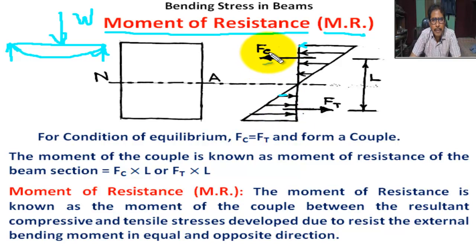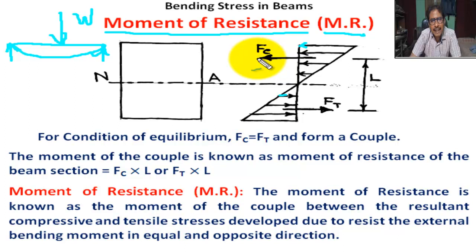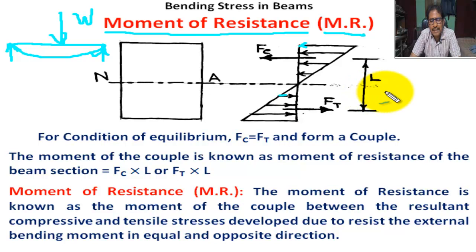If capital Fc is the line of action of the resultant force for compressive stress above the neutral axis, and Ft is the line of action of the resultant force for tensile stress, then Fc acts in one direction and Ft acts in the opposite direction. L is the distance between the line of action of Fc and Ft, and if it creates a couple, then L is known as the lever arm.